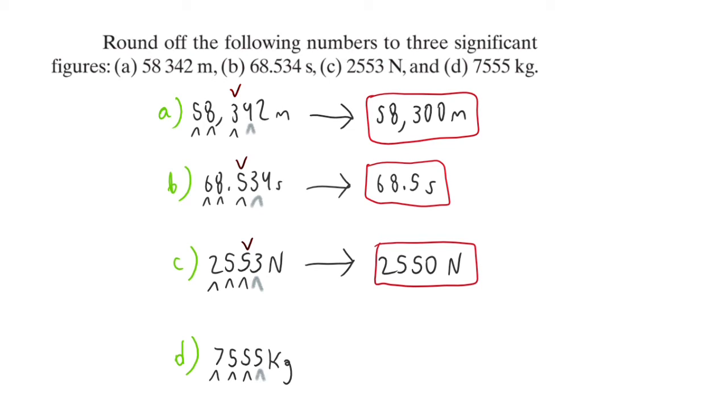If the number preceding is odd, then it does round up. If it's even, then it stays even. So since we have an odd number of 5, then it will round up. So this becomes 7,560. And this is our last answer.